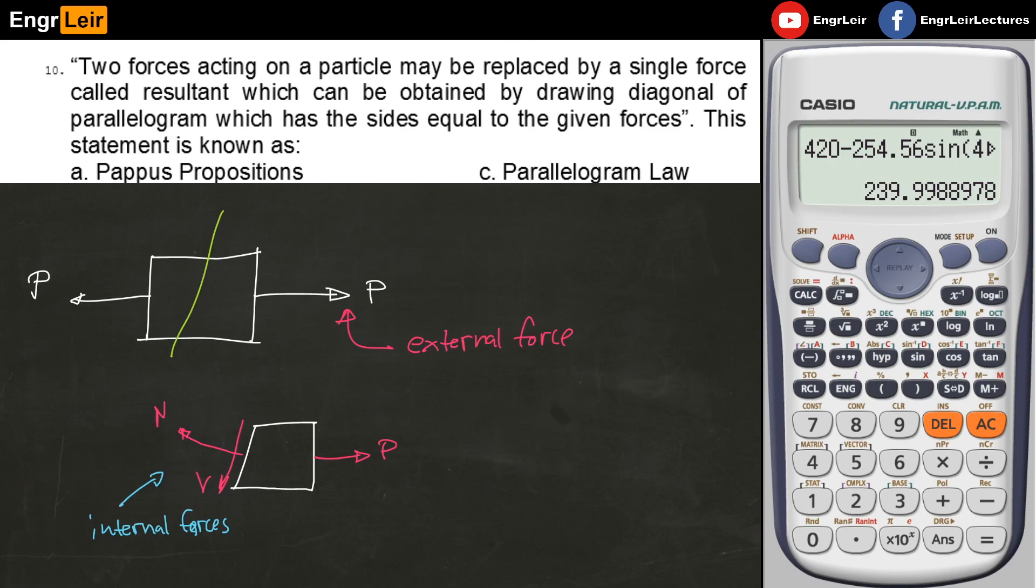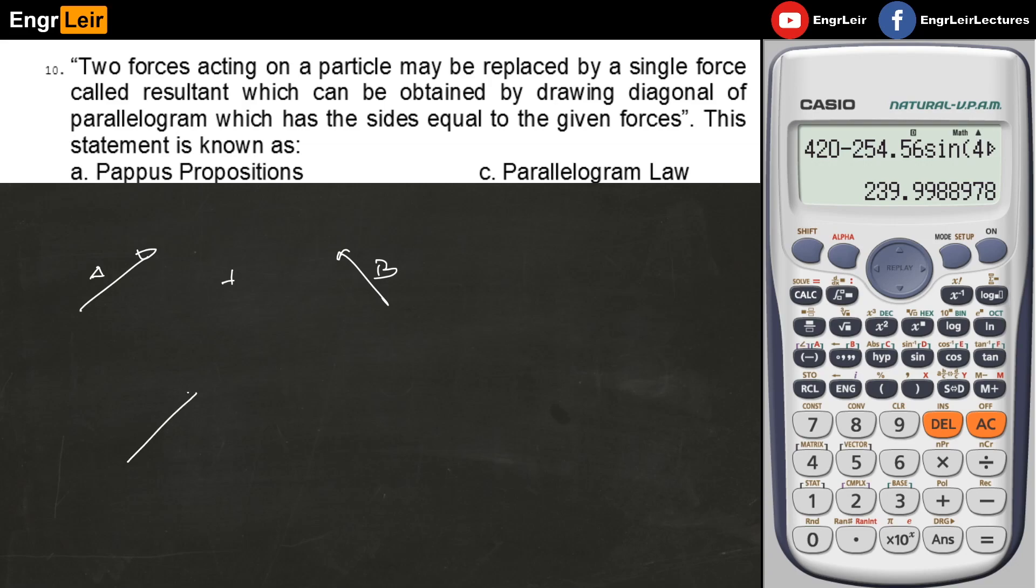Two forces acting on a particle may be replaced by a single force called the resultant which can be obtained by drawing diagonals of parallelogram which has the sides equal to the given force. This statement is known as, obviously, the parallelogram law. When you have two vectors A and B, to get their resultant, you create a parallelogram with sides A and B. The parallelogram, then you take the diagonal of the parallelogram - that's the resultant. That is the parallelogram law.